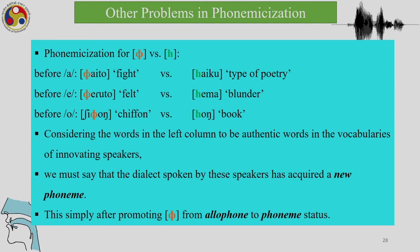Considering words with the bilabial fricative in the vocabularies of innovating speakers, we must say the dialect spoken by these speakers has acquired a new phoneme — simply promoting the sound from allophone to phoneme status. Hence there can be those in-between stages where an allophone can slowly and gradually move to phoneme status.